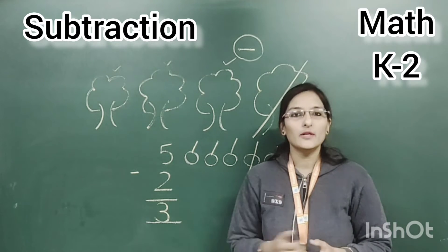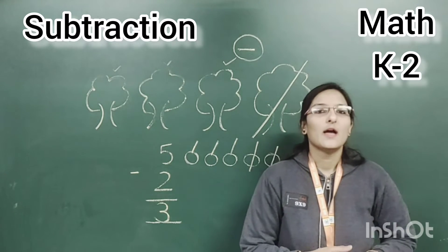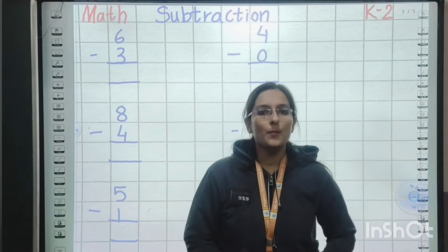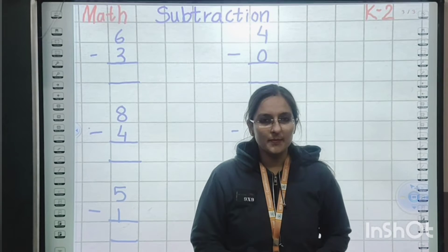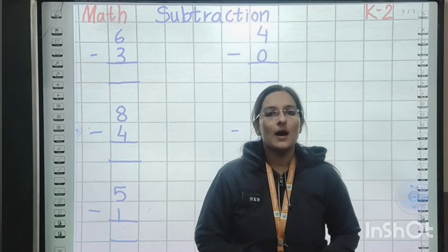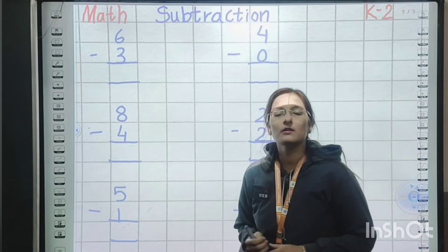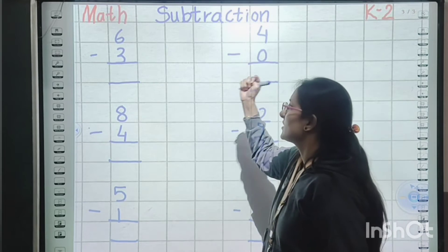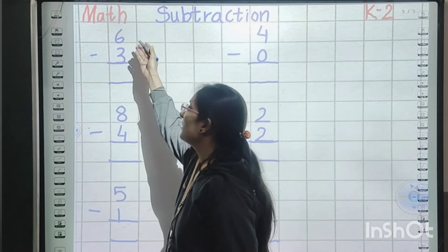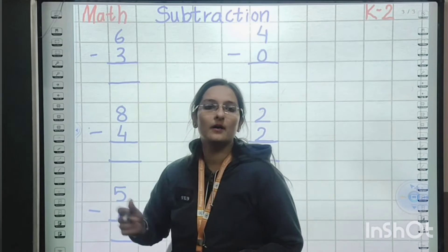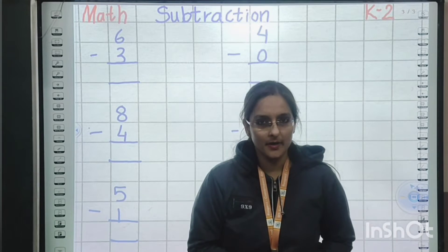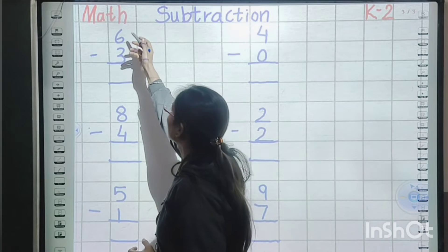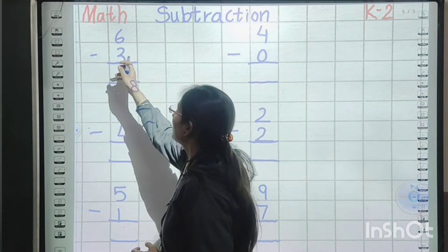So now kids, I hope you are able to understand and apply these rules on sums. Now students, we will apply those rules on the given sums. We are going to subtract the bigger number by the next smaller number. There is six, a subtraction sign, and three — we can say six minus three.